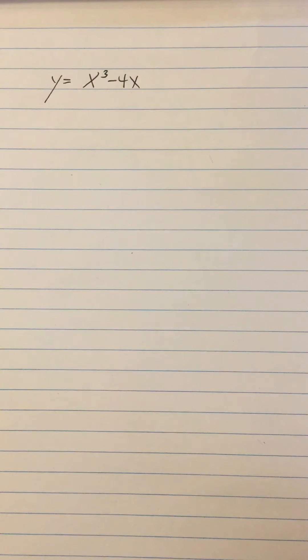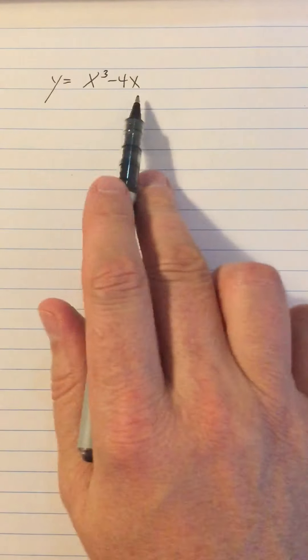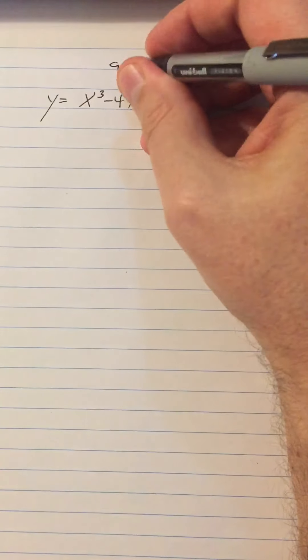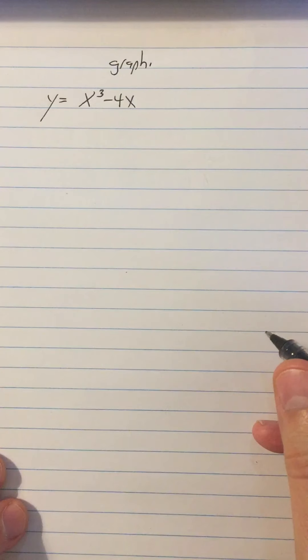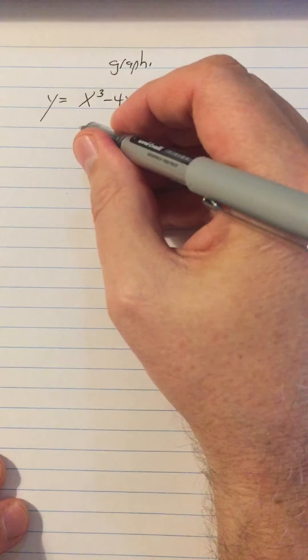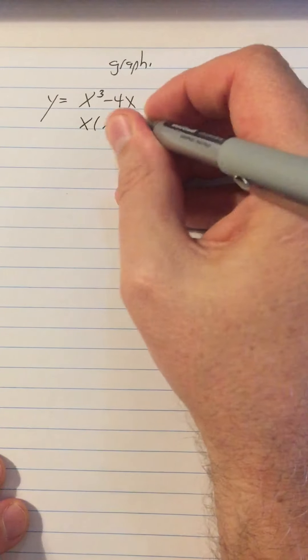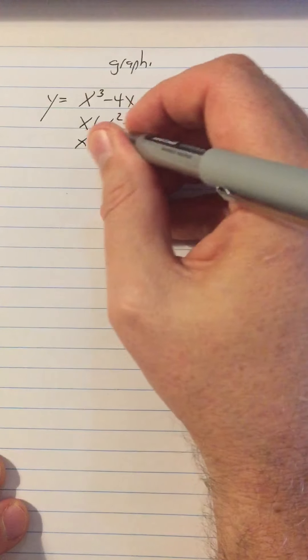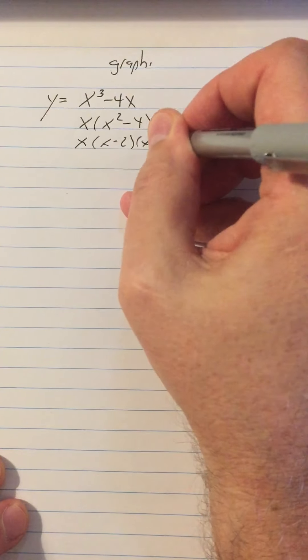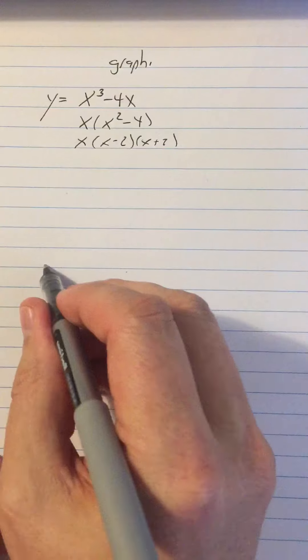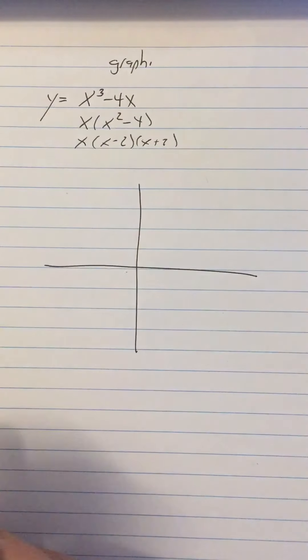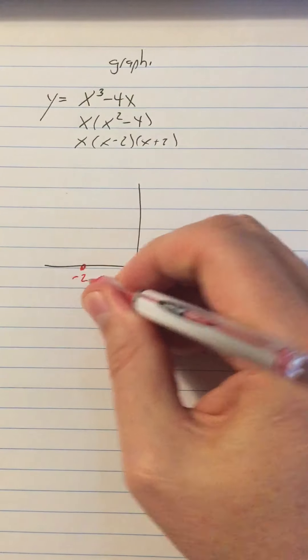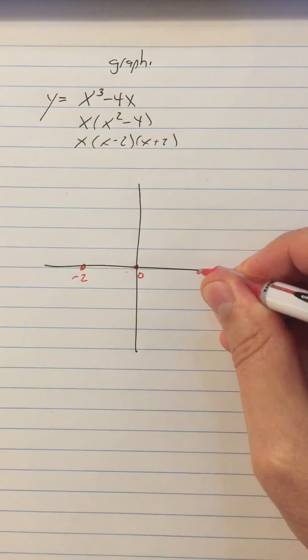Now let's go back to Algebra 2. In Algebra 2, you'd be given a function like this and somebody says graph it. So you would say, okay, well, first I'll factor it. So that's x times x squared minus 4. So it's x times x minus 2 times x plus 2. So I can graph it by plotting the x-intercepts at negative 2, 0, and 2.